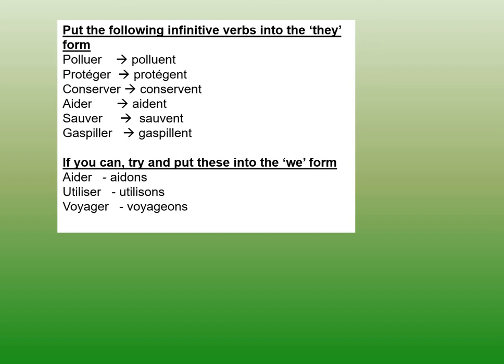We should have: aidons, utilisons, and for 'voyager' — nous voyageons — keeping that E to make the soft G sound. Let's recap some vocabulary from today with a fill-in-the-blanks. Pour éviter le déboisement, on pourrait — something — les forêts. What words are missing to make this mean: in order to avoid deforestation, we could — protect the forests. You might have something else but as long as it makes sense.